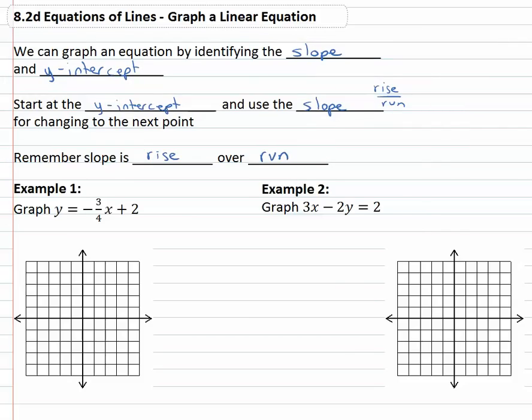So for example, if we're asked to graph the equation y equals negative three fourths x plus two, we remember that y equals mx plus b and we can quickly see that m, the slope, is negative three fourths. We can also see quickly that b, the y-intercept is two.